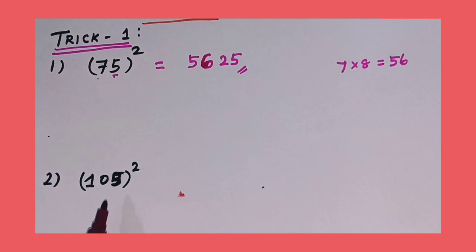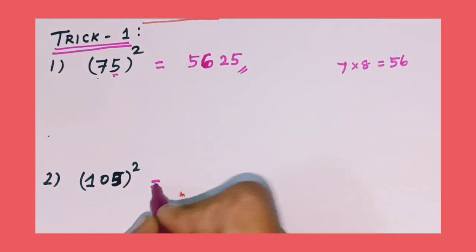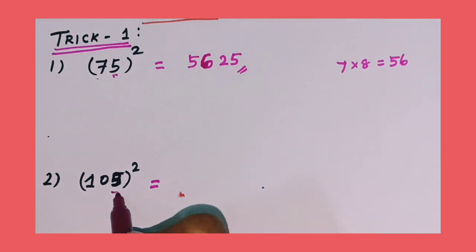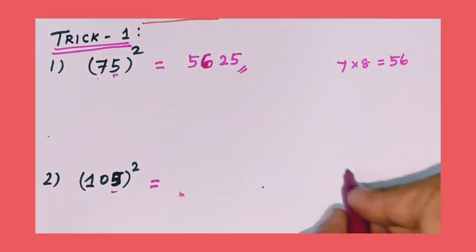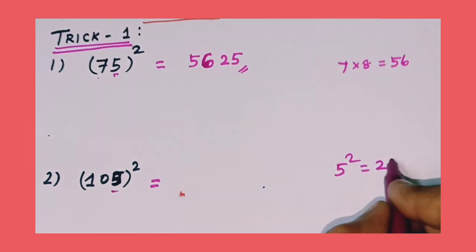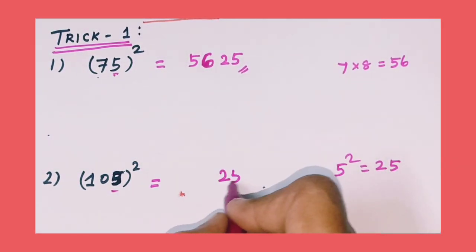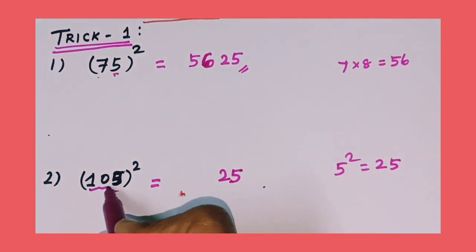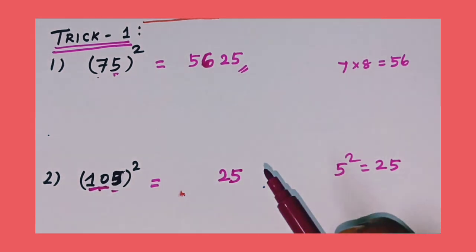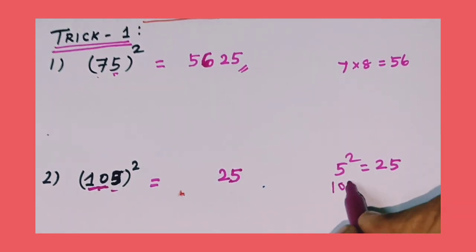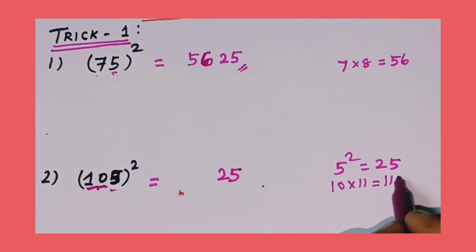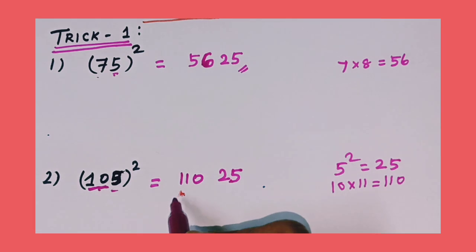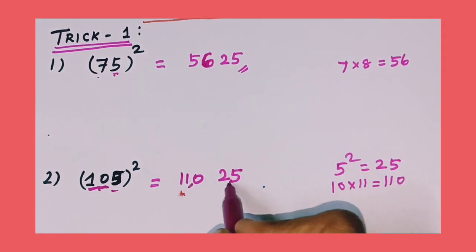Next question: 105 squared. First, square the unit digit — 5 squared is 25. Write 25. Next, take the remaining digits: 10, and 10's next number is 11. Multiply 10 into 11 equal to 110. Write 110 before 25. The final answer is 11,025. This is the final answer.